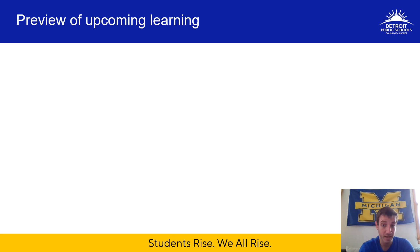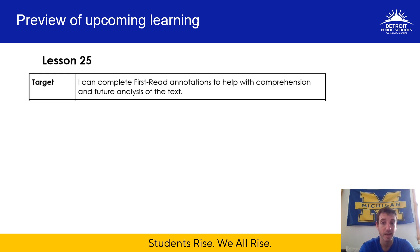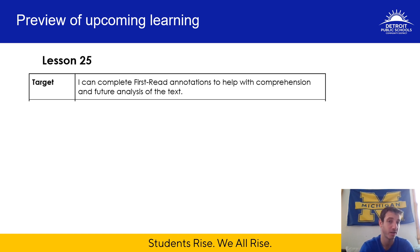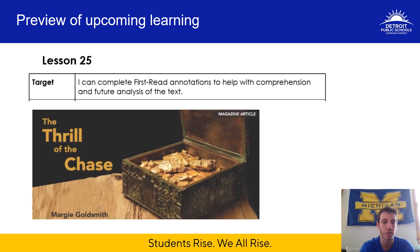Next week will be Week 6, and the first lesson is Lesson 25. The learning target is: I can complete first read annotations to help with comprehension and future analysis of the text. When we start a new week, we start a brand new text. The text is called The Thrill of the Chase by Marjorie Goldsmith — it's a magazine article. I've read it a bunch of times and really enjoy it; I think you'll enjoy it too.